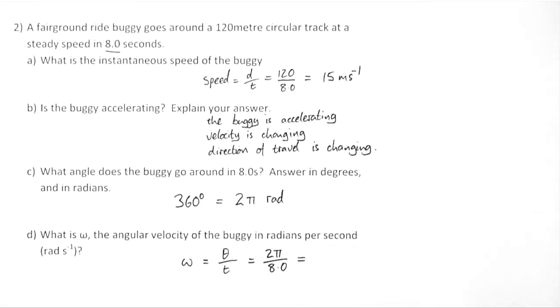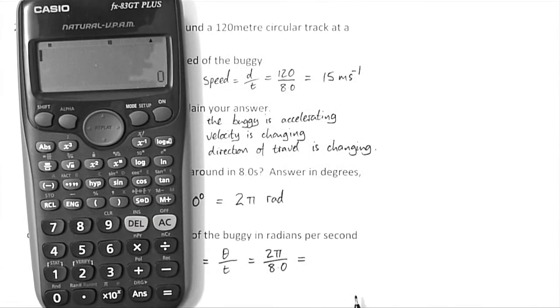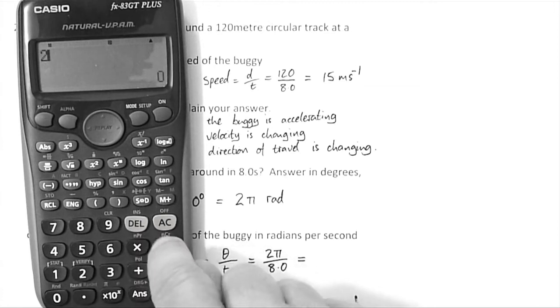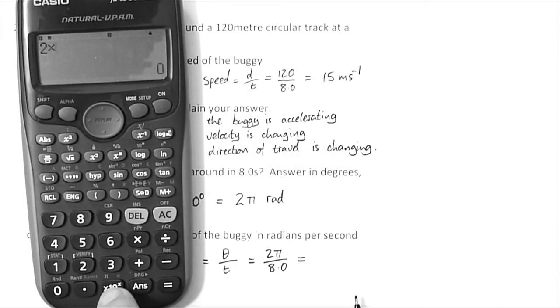For this one, we'll use the calculator. So 2 times, and we've got pi built into this calculator, here. Shift pi. So I've got 2 times pi,